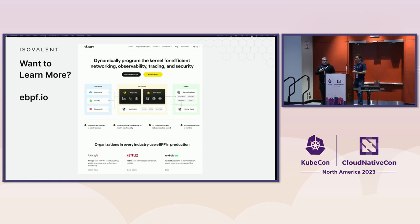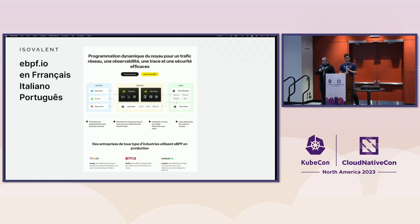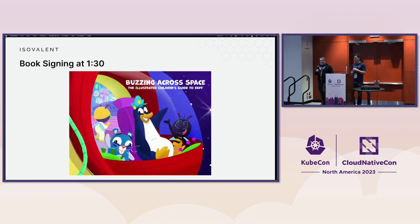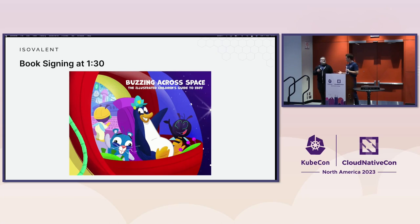That's the end — we're just going to wrap up here. If you want to learn more about eBPF, I recommend checking out ebpf.io. It's available in multiple languages including French, Italian, and Portuguese. We're also looking for people to help translate it into more languages to bring eBPF to other regions — there are currently translations in process for Italian, Swahili, and Chinese. So if you speak another language, please talk to me after this talk. And last thing — shameless self-promotion — I just released a book: 'Buzzing Across Space: The Illustrated Children's Guide to eBPF.' I'll be signing at 1:30 at the Cilium Experience Center.